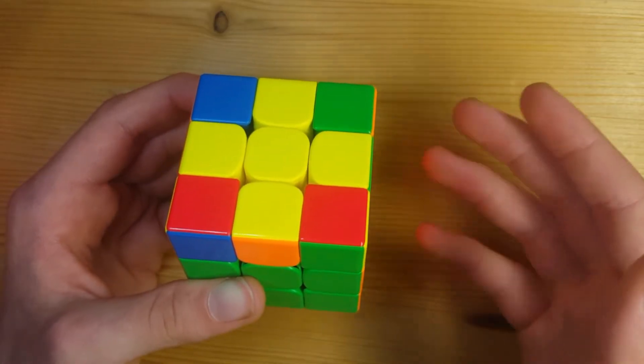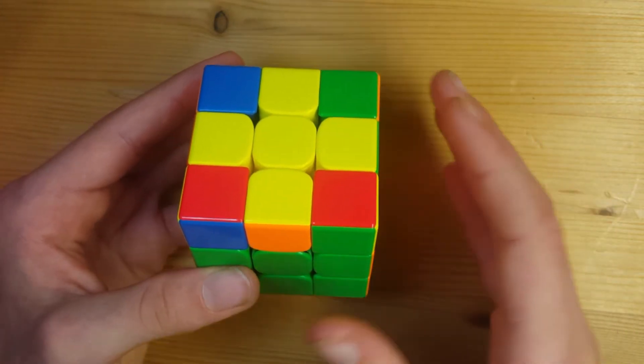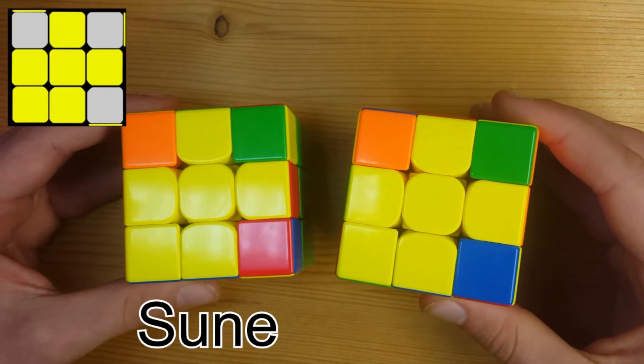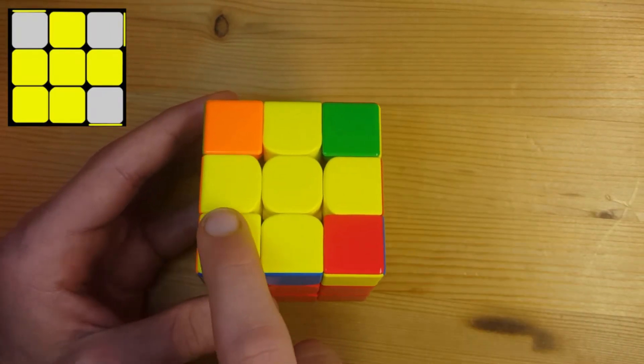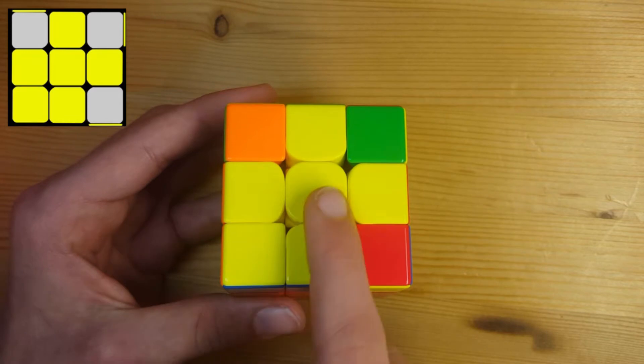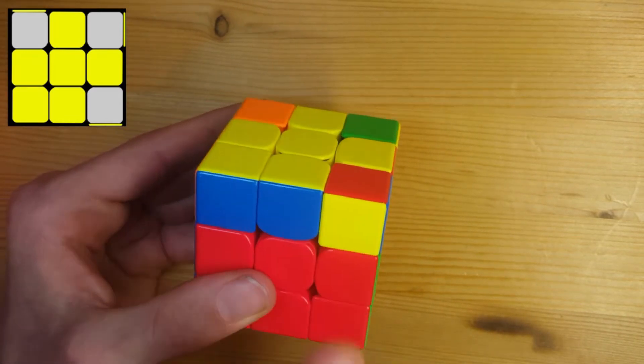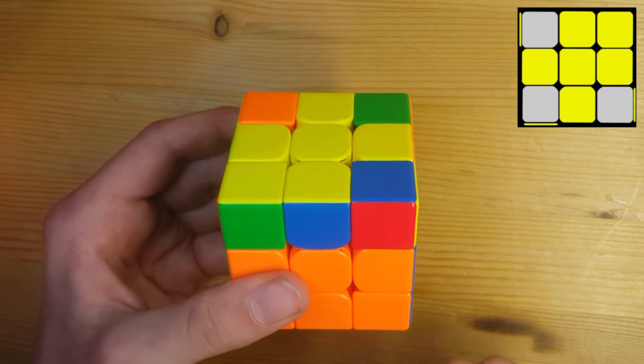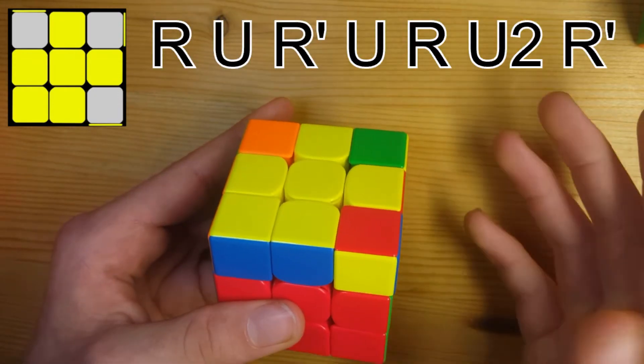And now there are seven different things that could come up, different orientations of the corners, and I'm gonna teach you every case and how to solve each one. The first two cases are called Sune and Anti-Sune. The first one is called Sune. It has one yellow corner facing up like this and then the other three are random colors. When you put this yellow corner in the bottom left like this, this corner here should show yellow on the front. If it doesn't then it's the Anti-Sune case and this one is solved a little bit differently. But if it does then we're gonna do this algorithm here which you should already be familiar with.